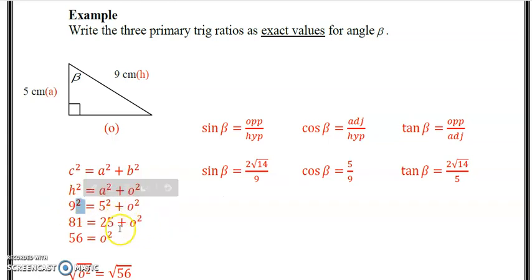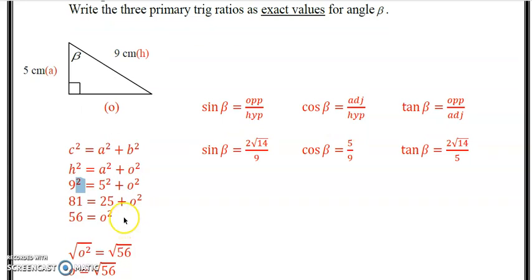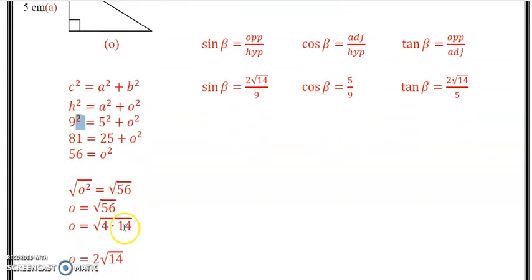9 squared is 81. 5 squared is 25. Subtract 25 from both sides, we get 56. Take the square root of 56, which you can't do easily. So then we do what we learned in the last unit when we did, well we did it in grade 10 as well, but changing this entire radical into a mixed radical. So the two factors are 4 and 14. 4 is the greatest perfect square factor. So our side O is 2 square root of 14. And we leave it like that. That's an exact value. No decimals.